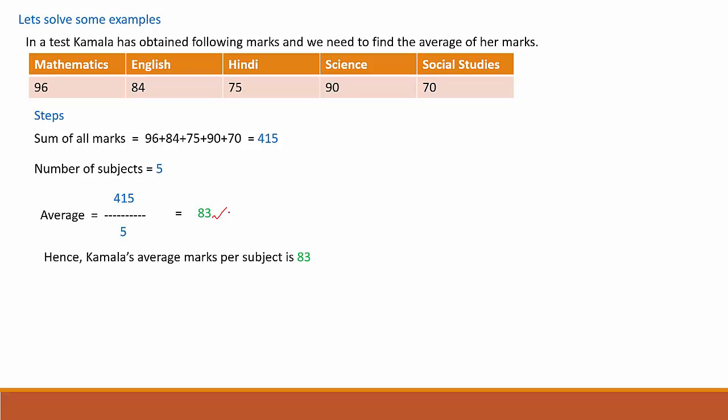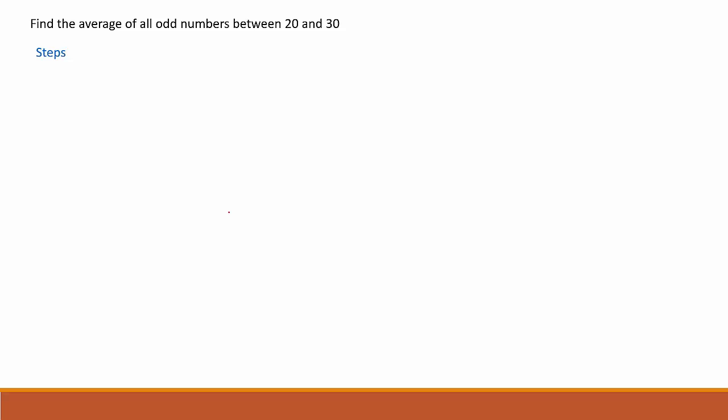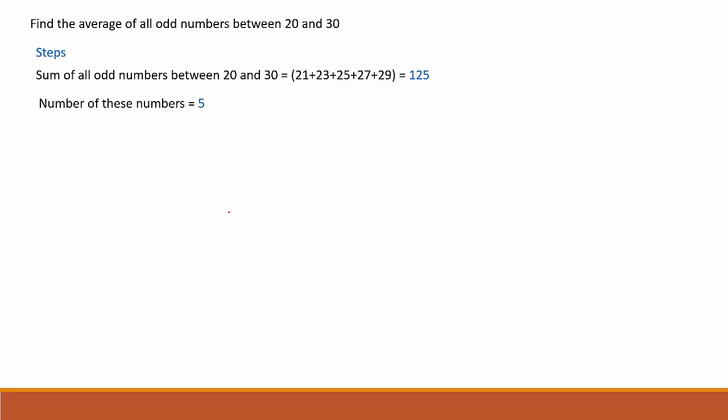Now let us look at another example: find the average of all odd numbers between 20 and 30. First, let us find the sum of all odd numbers between 20 and 30, which is 125. There are 5 odd numbers between 20 and 30. So the average equals 125 divided by 5, which equals 25. Therefore, 25 is the average of all odd numbers between 20 and 30.